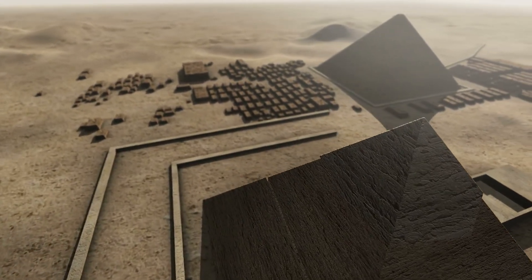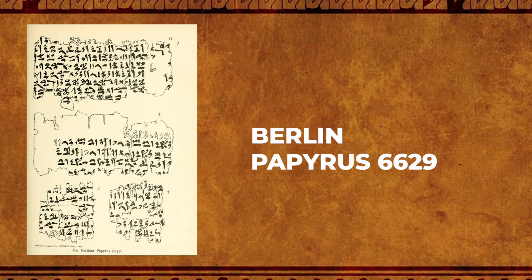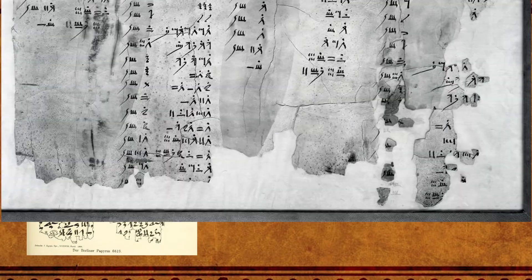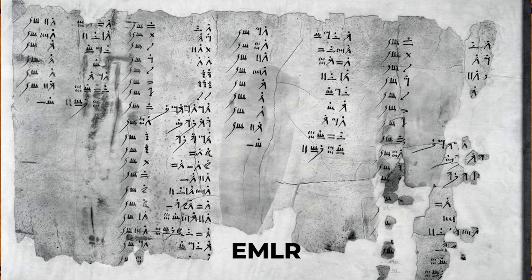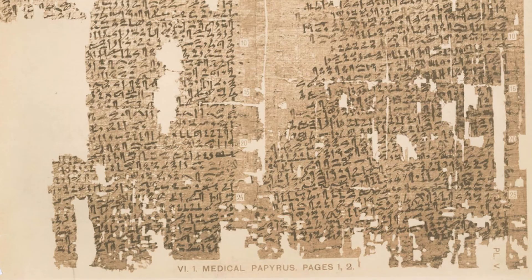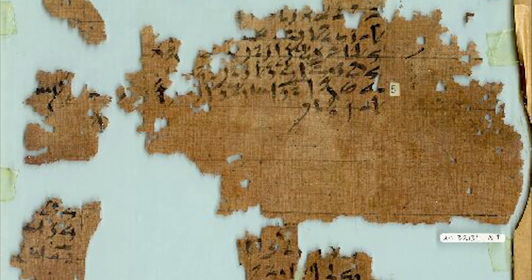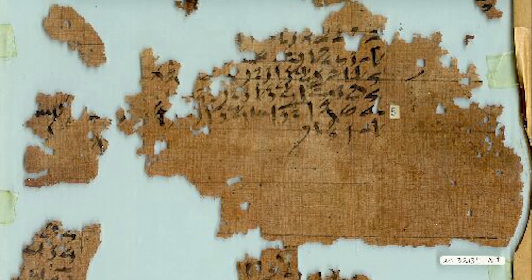Other papyri were also found, but most are only fragments. The Berlin Papyrus is only two problems long, but seems to suggest the Egyptians knew the Pythagorean theorem. Rind also bought the Egyptian Mathematical Leather Roll, or EMLR, which included another fraction table. The Lahun Mathematical Papyri are a collection of different texts from administrative, veterinarian, and medical fields, but also came with mathematical fragments, which included the 2 over N table.